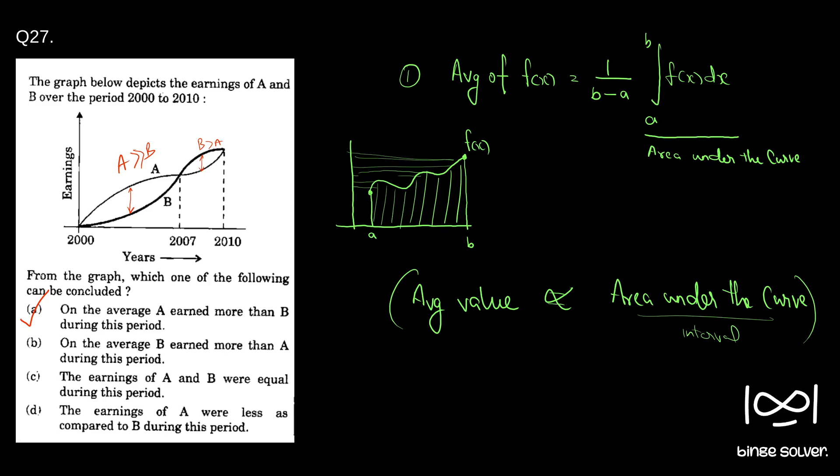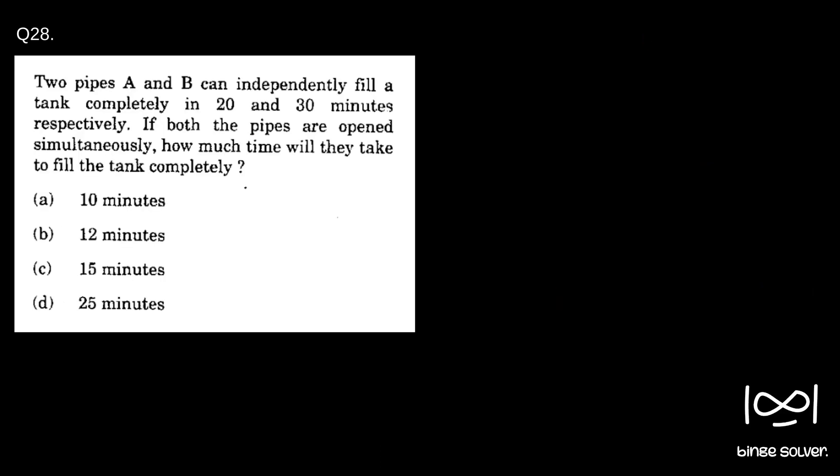Next question. Question 28. Two pipes A and B can independently fill a tank completely in 20 and 30 minutes respectively. If both the pipes are open simultaneously, how much time will they take to fill the tank completely?